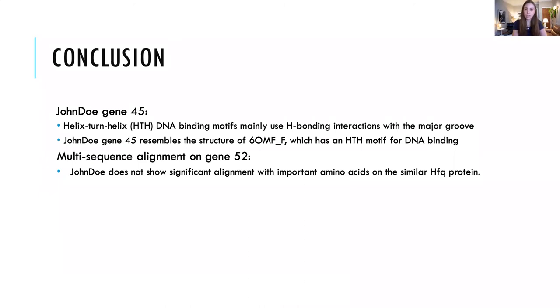Also, based on the multi-sequence alignment results in gene 52, we can conclude that John Doe does not have significant alignment with similar HFQ proteins, because the sequence lacks most of the critical amino acids for HFQ. This means that John Doe is in fact unlikely to have HFQ protein function.